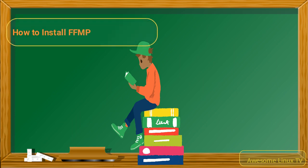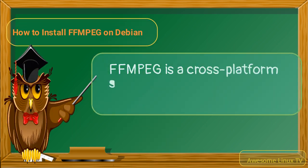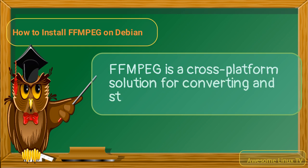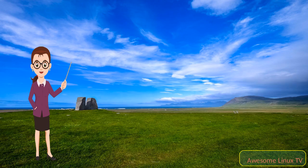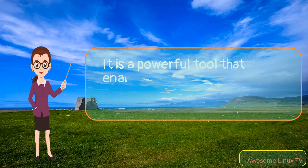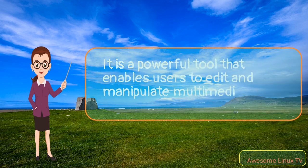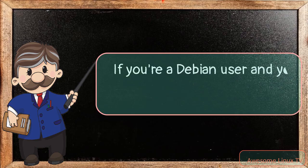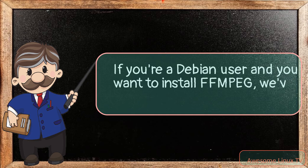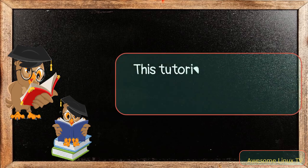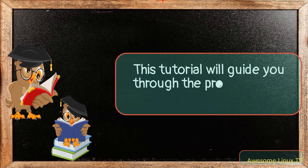How to install FFmpeg on Debian? FFmpeg is a cross-platform solution for converting and streaming audio and video files. It is a powerful tool that enables users to edit and manipulate multimedia files with ease. If you're a Debian user and you want to install FFmpeg, we've got you covered. This tutorial will guide you through the process step by step.